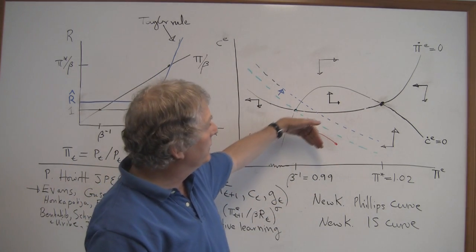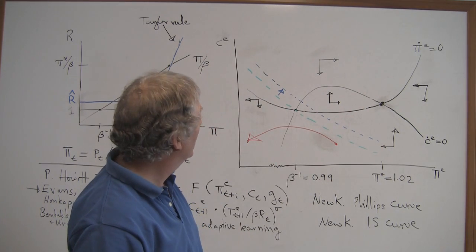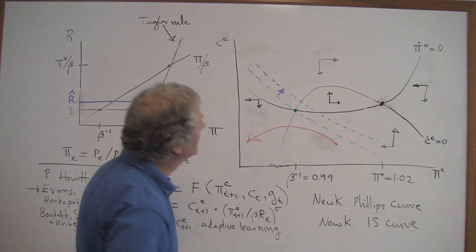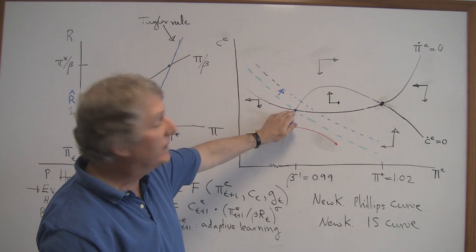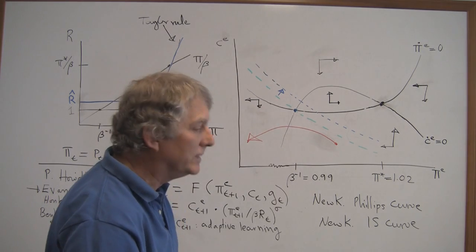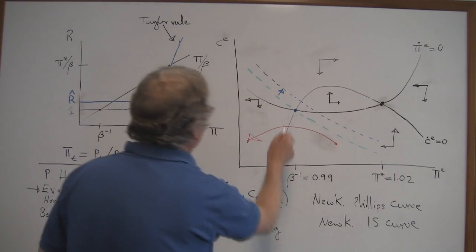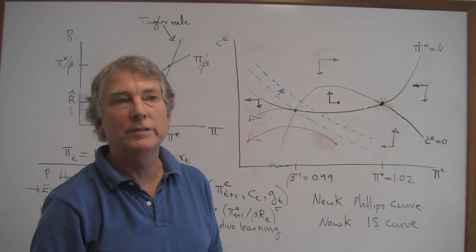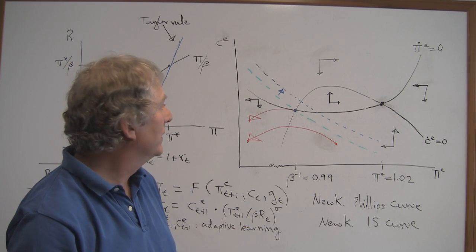So the saddle point that divides the deflation trap region from the stable region gets pushed up and to the right. And so what that means is that if you were at the previous deflation steady state and sitting there, you're now pushed into the deflation trap region. And so you're going to get points now that look like this. And so you're going to get pushed off into this deflation spiral because you're now in the deflation trap region.